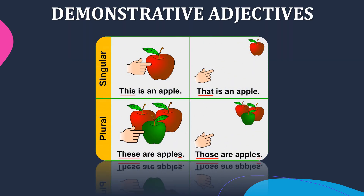What are demonstrative adjectives? Demonstrative adjectives are special adjectives used to point a person, place or a thing. It is used to modify a noun and it says whether an object is near or far.